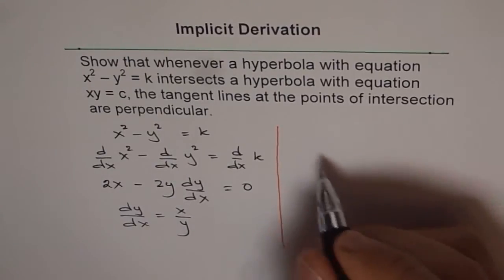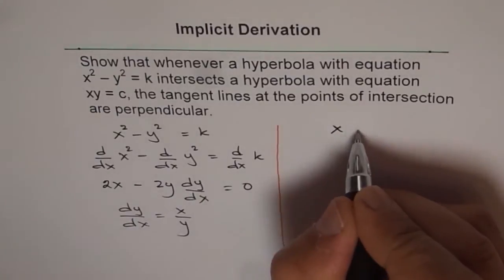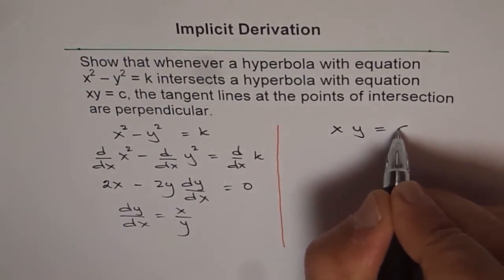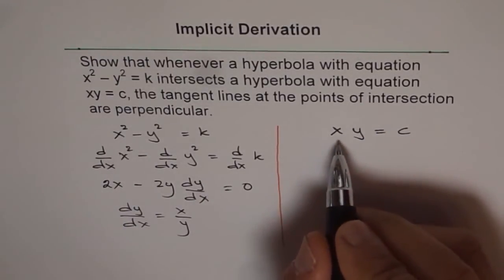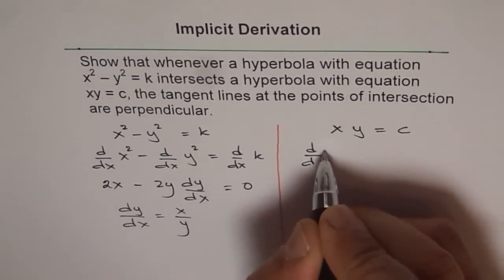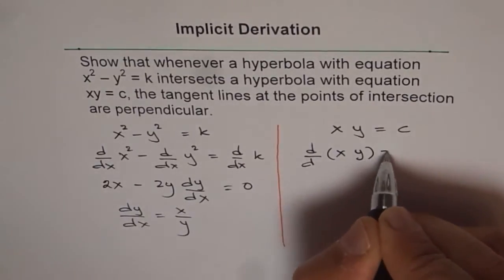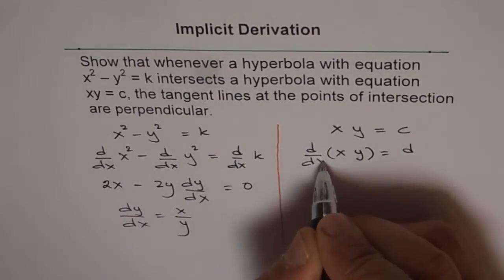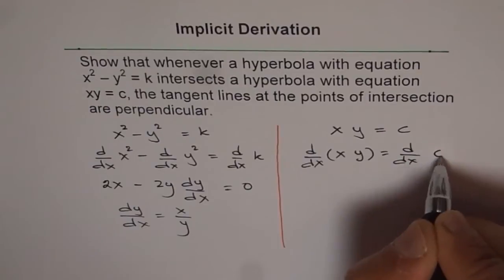So that's simple. Now on the other side, I get xy equals c. Now if I differentiate with respect to x, I have to apply the product rule. So we have d/dx of xy equals d/dx of c.